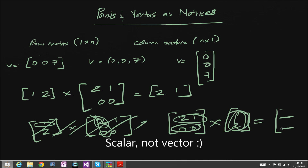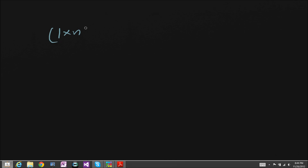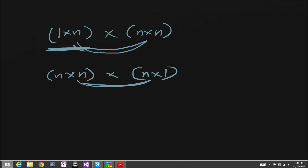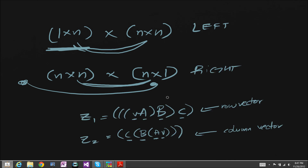The general rule is that when you have a row vector — a 1 by n row vector — multiplied against an n by n matrix, you always want the row vector to be to the left of the matrix. And if you have a column vector — an n by 1 vector — you always want it to be on the right of the n by n matrix. This is because the inner dimensions must always match.